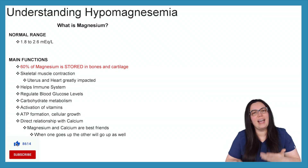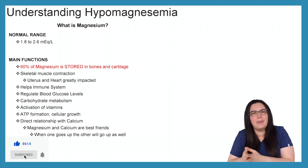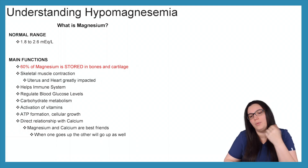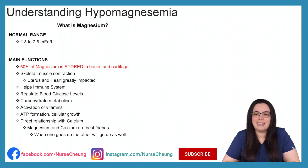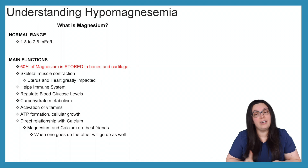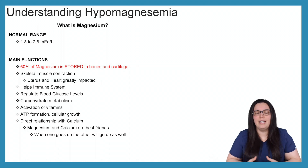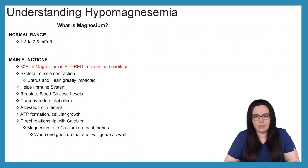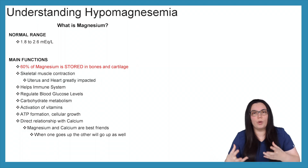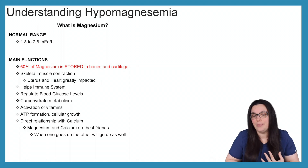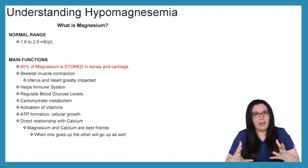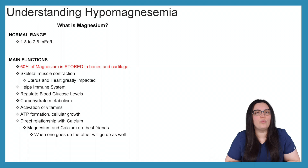In order to understand electrolyte imbalances, we have to understand what the electrolyte is. A normal range for magnesium is between 1.8 to 2.6 milliequivalents per liter. The main functions of magnesium include: 60% is stored in bones and cartilage, it supports skeletal muscle contractions specifically in the uterus and heart, helps immune system support, regulates blood glucose levels and carbohydrate metabolism, assists with vitamin activation, and is critical for ATP formation and cellular growth.